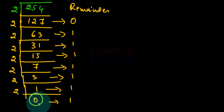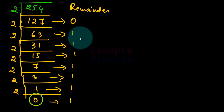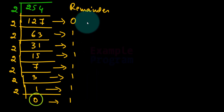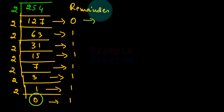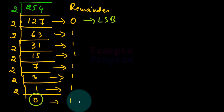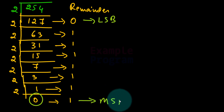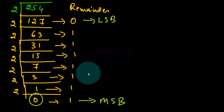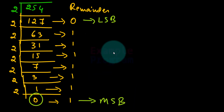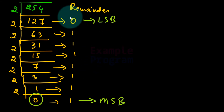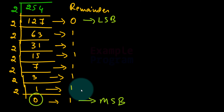Since we have got the quotient as 0 we stop dividing and look at the remainder values. The first remainder value we got is called the least significant bit, and the last remainder value is called the most significant bit. When writing in binary from left to right, we start with the most significant bit and move towards the least significant bit. These remainder values contain the binary digit representation of 254.